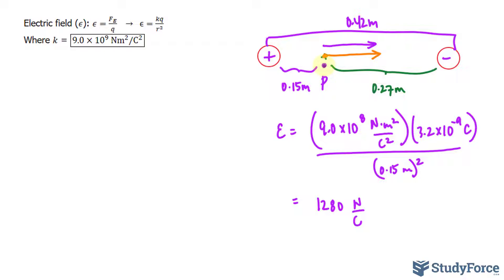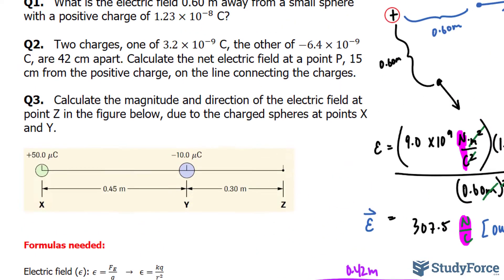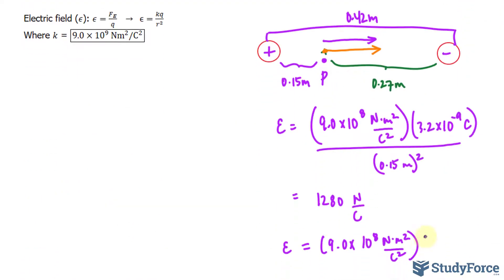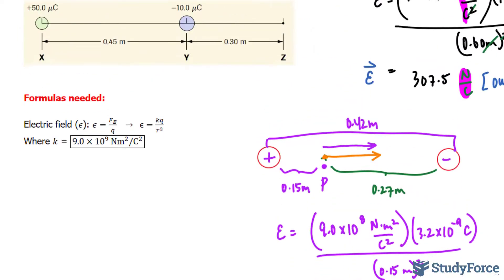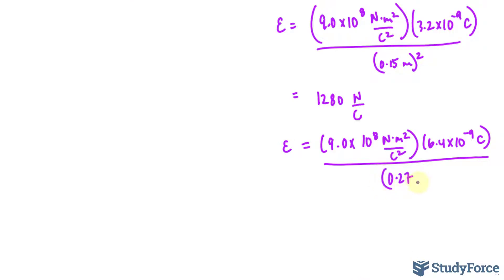Now we'll look for the magnitude between this point P and the negative sphere. So we'll repeat this calculation and we will not include the negative charge when calculating. The negative charge is negative 6.4, and we will not include the negative. We'll write it down as 6.4 times 10 to the power of negative 9 coulombs because we're only concerned about the magnitude. And the distance was 0.27. If you do this correctly, you should end up with 790.123, roughly that number, newtons per coulomb.